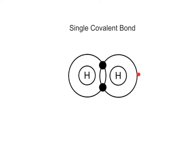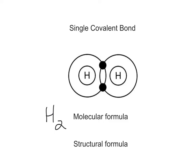An example of a molecule held together by a single covalent bond is hydrogen gas, which has a molecular formula of H₂. A molecular formula is a convenient abbreviation for a molecule, but it doesn't tell us anything about the type of bonds holding the atoms together. This is where structural formulas come in handy. In a structural formula, we can represent covalent bonds by including straight line dashes between the chemical symbols for the atoms. Each dash represents one shared pair of electrons. The structural formula for hydrogen gas is H—H, with one dash between the hydrogen atoms representing the single covalent bond.